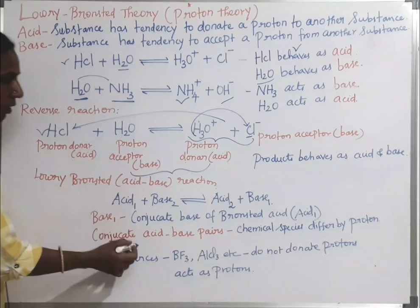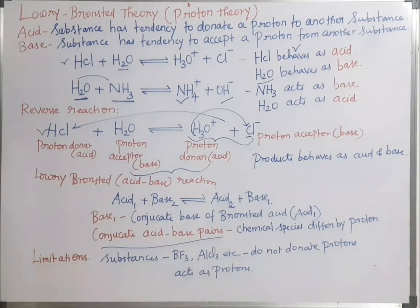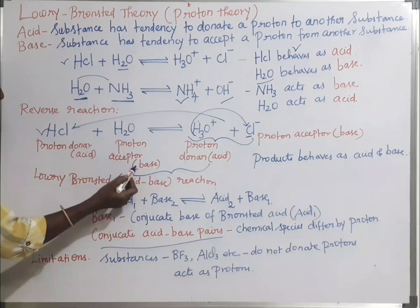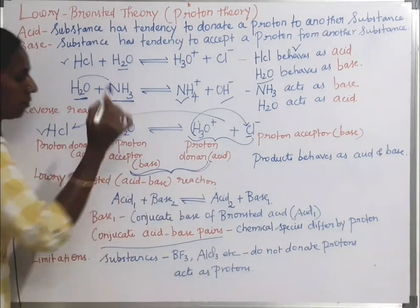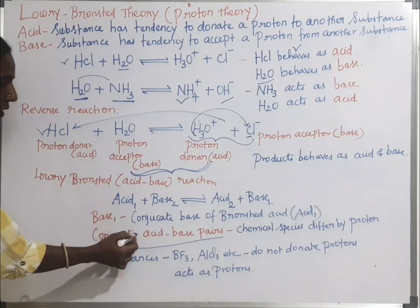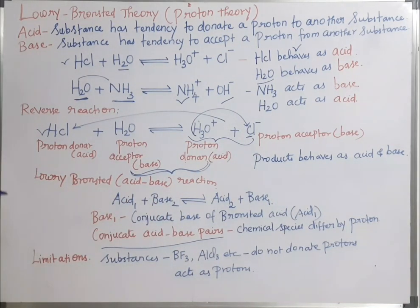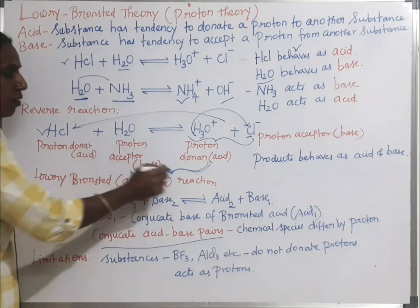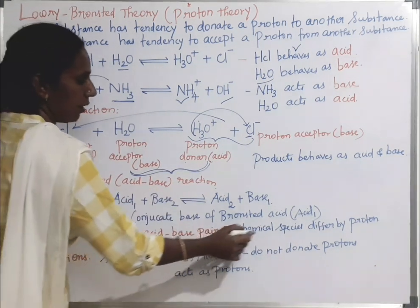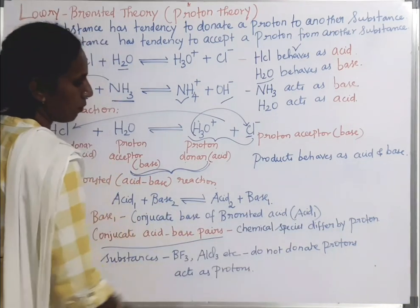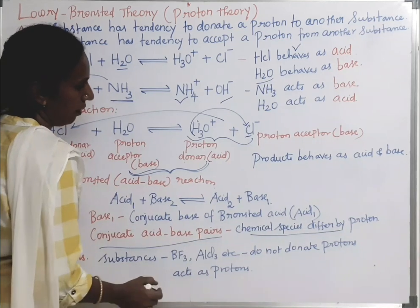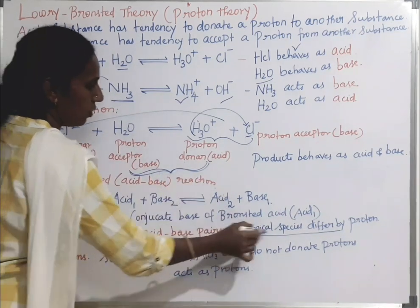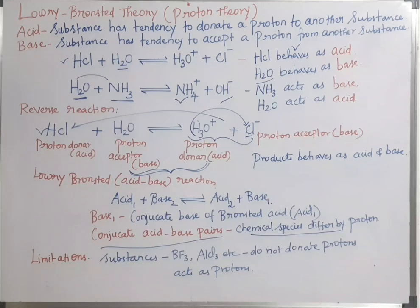Now let us see conjugate acid-base pairs. A proton acceptor base and its corresponding proton donor acid form a conjugate acid-base pair. 'Conjugate' means joining. Chemical species that differ by one proton are conjugate acid-base pairs.